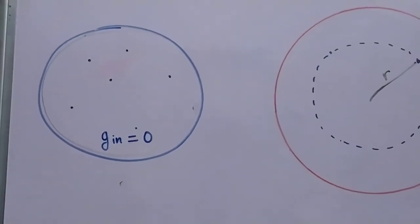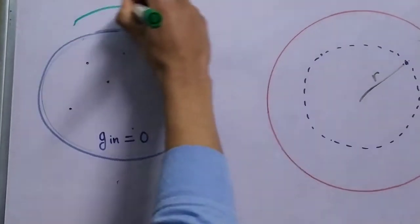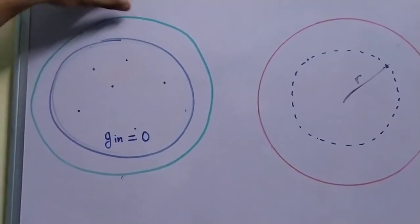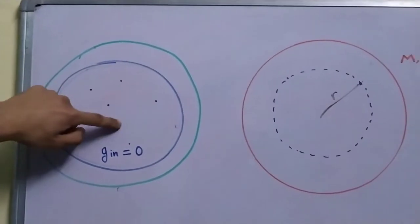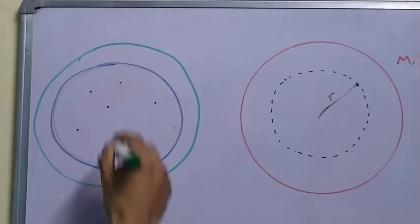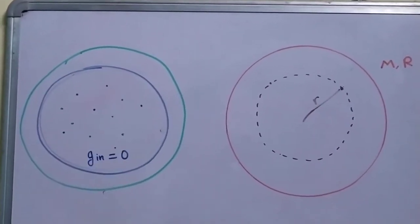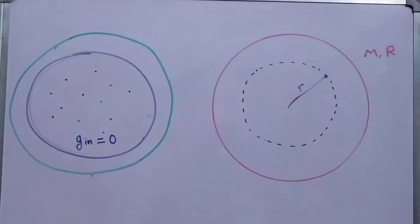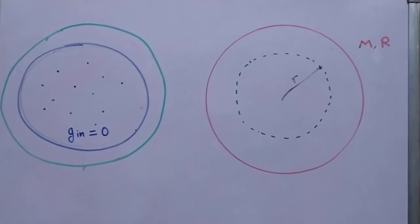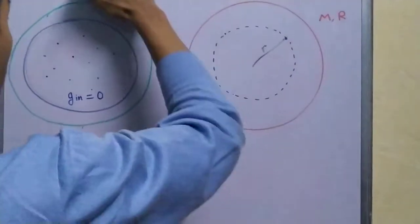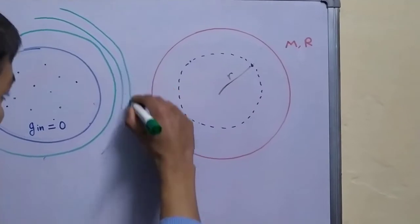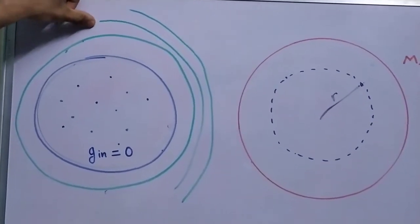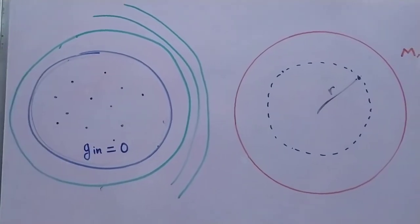What if I create another shell, something like this. The field due to this one at any point will be 0. The field due to the blue shell will also be equal to 0. So the field due to both of them will be equal to 0. Now you can extend this argument. You can construct as many hollow shells as you like. The field due to any of these inside will be 0.